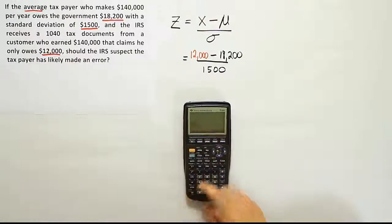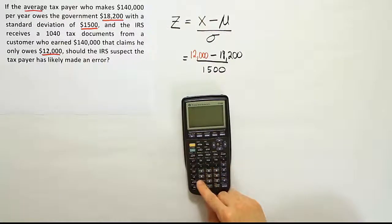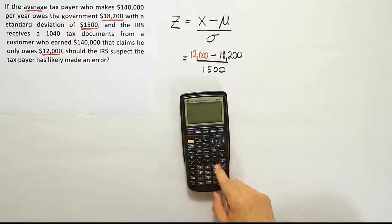I'm going to go ahead and use my calculator to speed up the process here. It'll be $12,000 minus $18,200. So that's going to be a difference of $6,200, and then divide that by the $1,500.